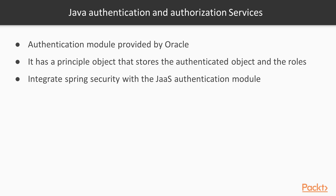JAAS is Java Authentication and Authorization Services. It is an authentication module provided by Oracle Java, introduced in version 1.3 or 1.4. It can be used as an authentication module just like the Spring Security authentication module. JAAS has a principal object which stores the authenticated object as well as the roles.